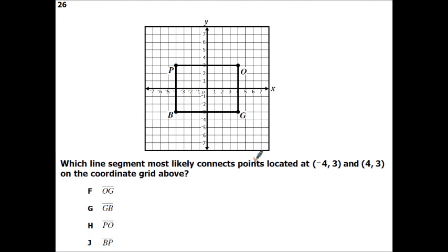Which line segment most likely connects points located at negative 4, 3, and 4, 3. So negative 4 is going to make me go, because we always start at our origin, 4 to the left. Whoops, I'm sorry. It said negative 4, positive 3. So I went negative 4 to the left, and then positive 3 up. And then 4 to the right, and 3 up. So I'm looking for segment PO.